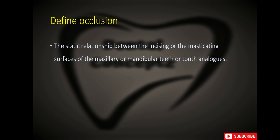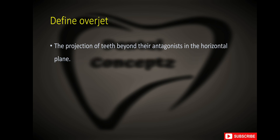What is occlusion? Occlusion is the static relationship between the incising or masticating surfaces of the maxillary and mandibular teeth or tooth analogs. What is overjet? Overjet is the projection of teeth beyond their antagonist in the horizontal plane — basically, the horizontal overlap between maxillary and mandibular anterior teeth.